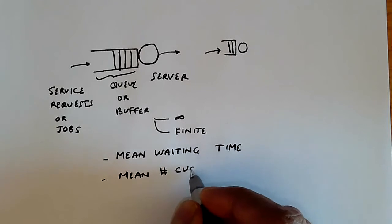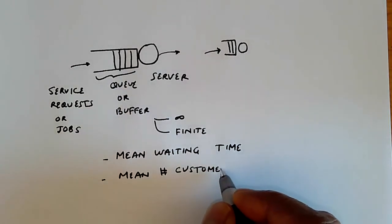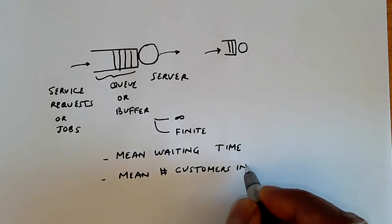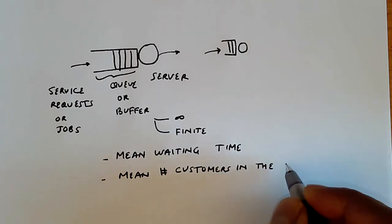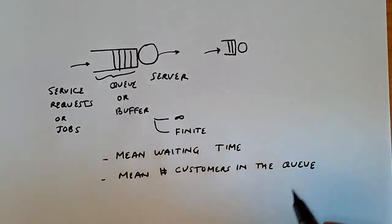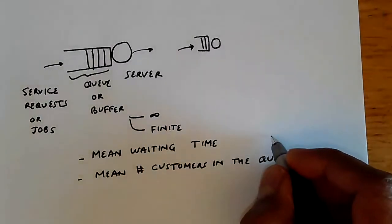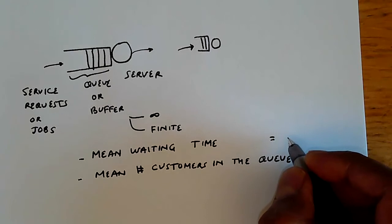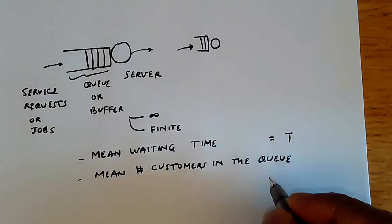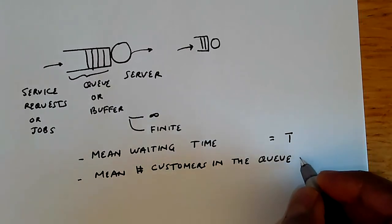And the other thing that you're quite interested in is the mean number of customers in the queue. That's how many, well, how big the queue is on average. So, the mean waiting time is often denoted by capital T. And the mean number of customers in the queue is denoted usually by capital N.